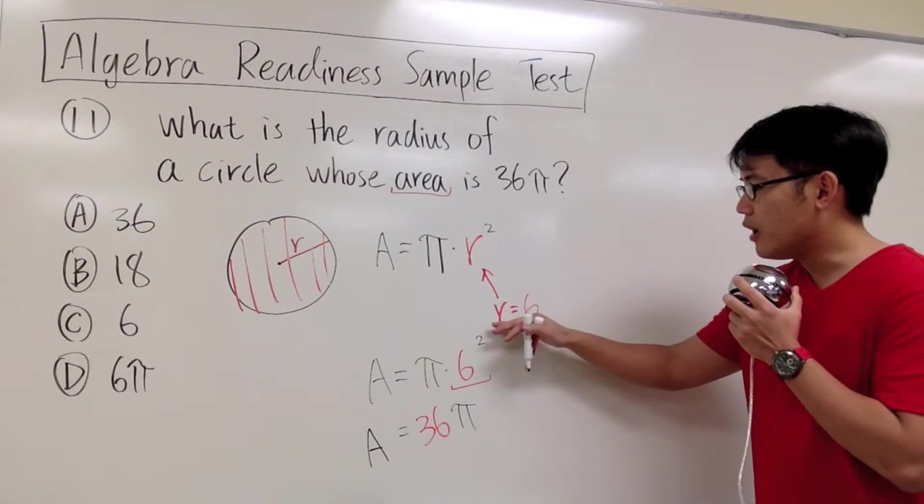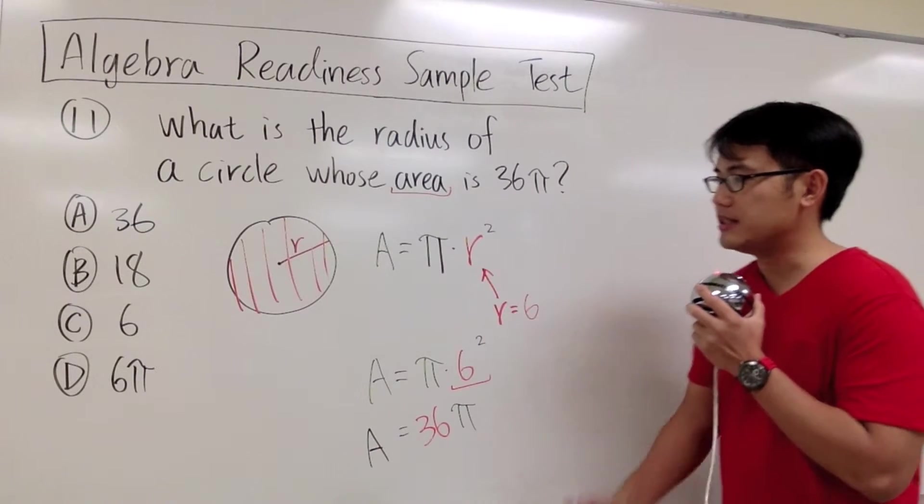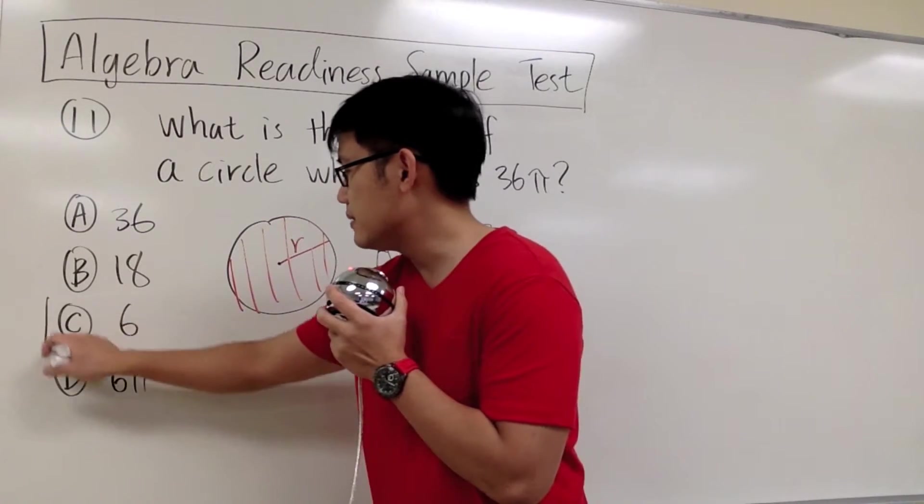Therefore, we know that the r, the radius, has to be 6. And that's the answer choice C, right here.